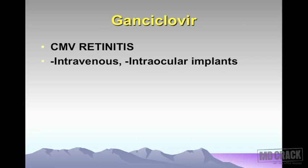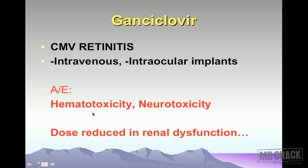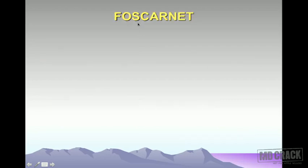The next drug in the acyclovir group is ganciclovir. This is used for CMV retinitis, given by intravenous route and as intraocular implants. Ganciclovir does produce hematotoxicity (bone marrow suppression) and neurotoxicity. As with the previous drug, you need to monitor renal function and reduce the dose if renal function is diminished.